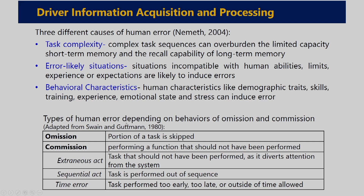Types of human error depend on behavioral patterns of omission and commission, adapted from Schwein and Gertmann (1980). Omission is the portion of the task that is skipped. Commission is performing an additional task or performing something not required. Commission can be categorized into three types: extraneous act (additional steps performed which are not required), sequential act (not following the proper sequence of task performance), and time error (the task is performed not at the appropriate time).